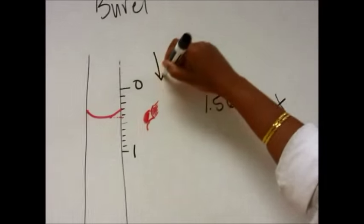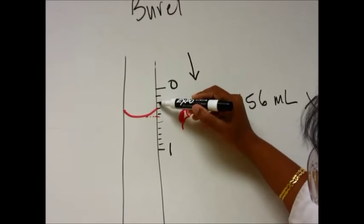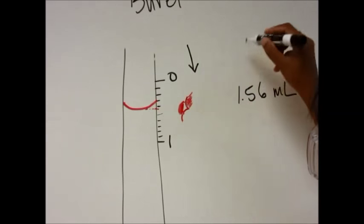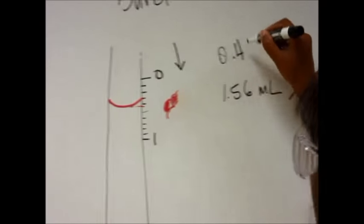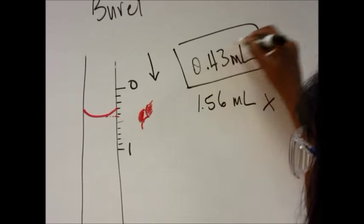So this is going to be 0.1, 0.2, 0.3, 0.4—so 0.43 milliliters. That is going to be your reading because you're reading top down, not bottom up. That is the secret to reading a burette.